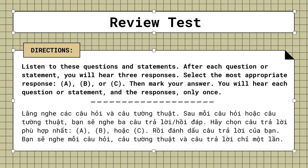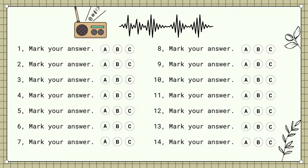Part 2. Review Test. Directions. Listen to these questions and statements. After each question or statement, you will hear three responses. Select the most appropriate response, A, B, or C. Then mark your answer. You will hear each question or statement and the responses only once.